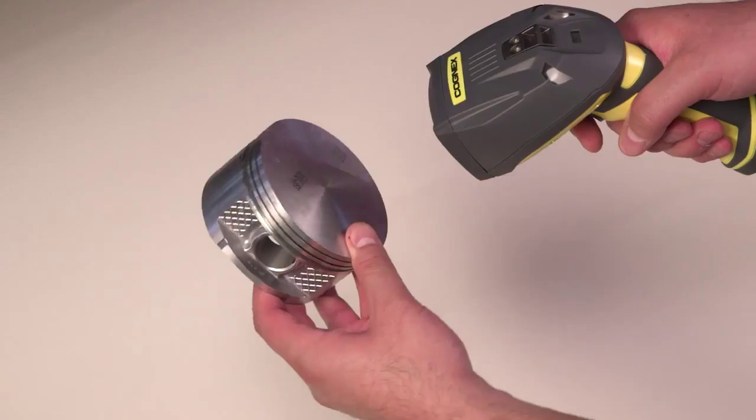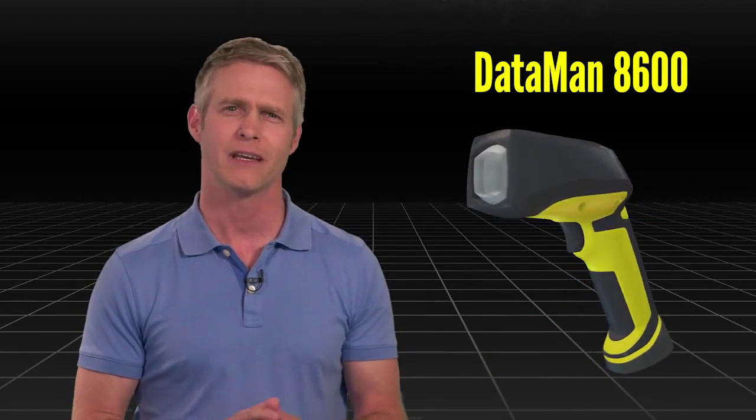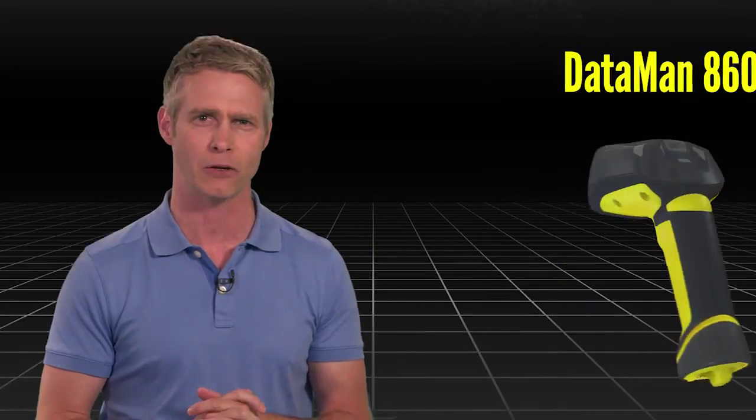The Dataman 8600 direct part mark or DPM readers are equipped with the most advanced barcode reading algorithms and are capable of reading the most challenging DPM codes.